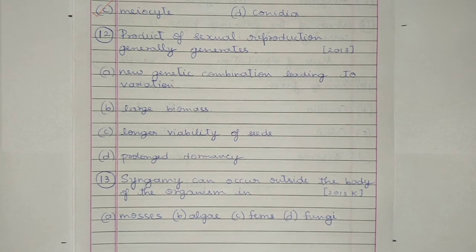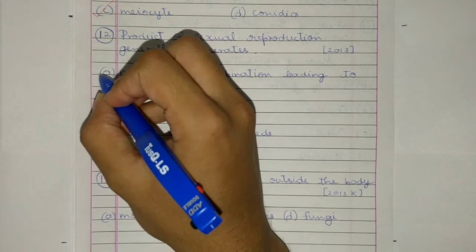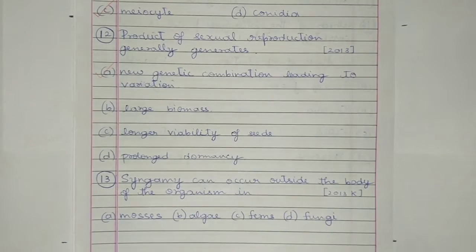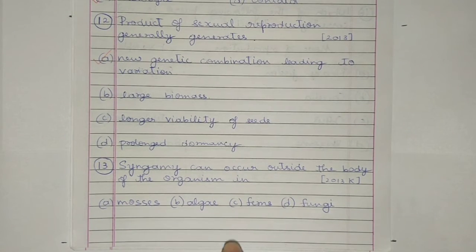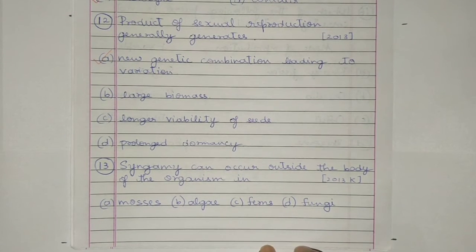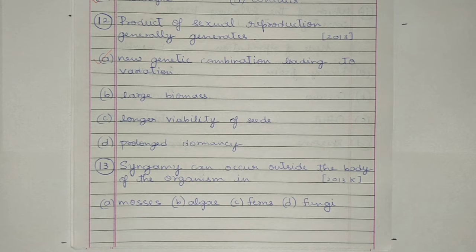Question 12. Product of sexual reproduction generally generates: a) new genetic combination leading to variation, b) large biomass, c) longer viability of seeds, or d) prolonged dormancy. The correct option is a. Question 13. Syngamy can occur outside the body of the organism in: a) mosses, b) algae, c) ferns, or d) fungi. The answer is b) algae.